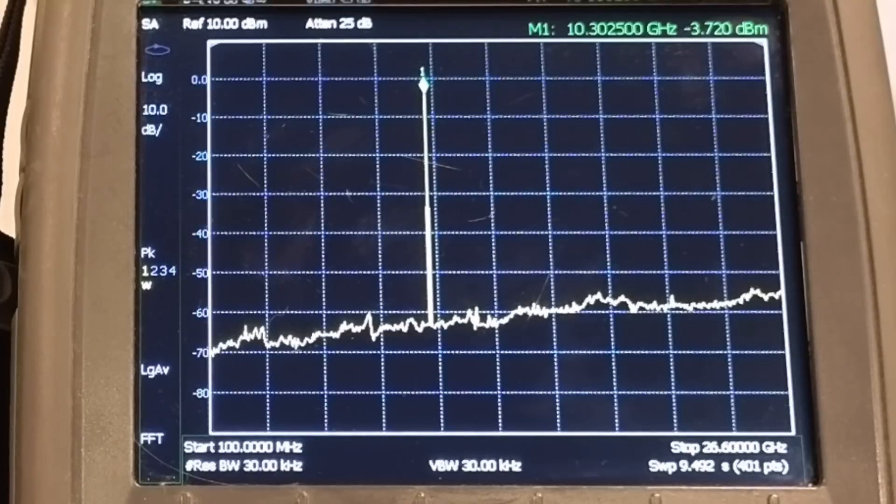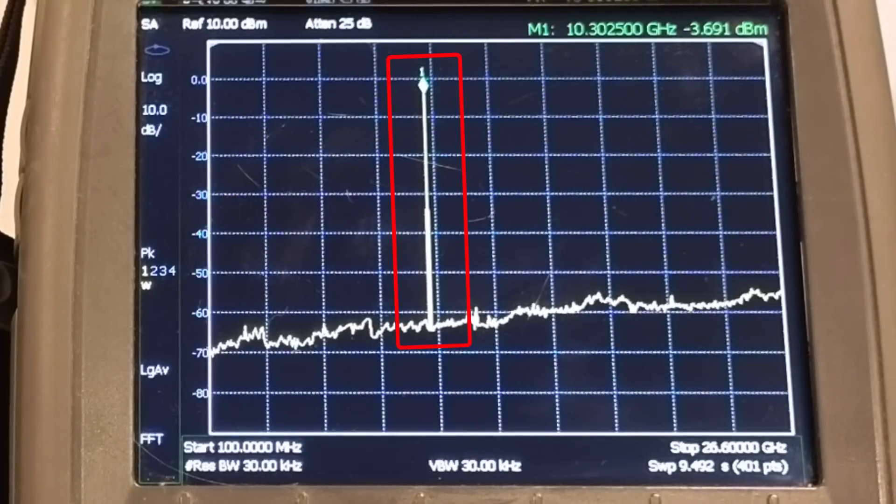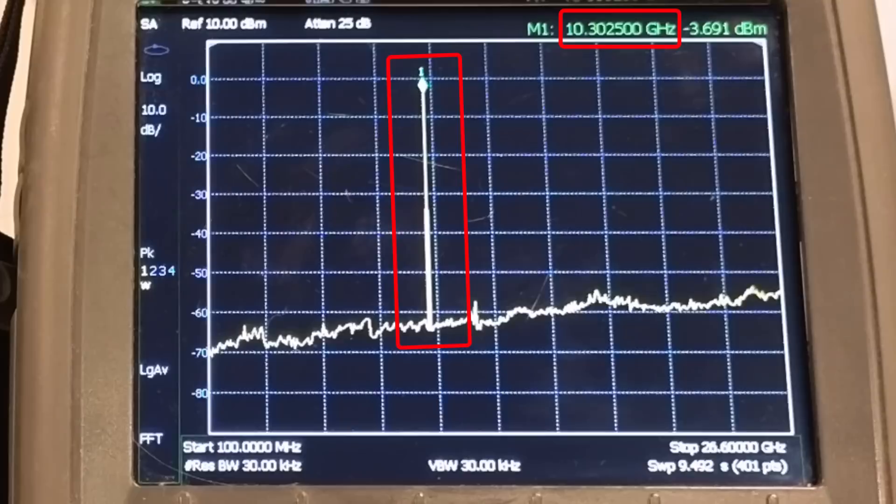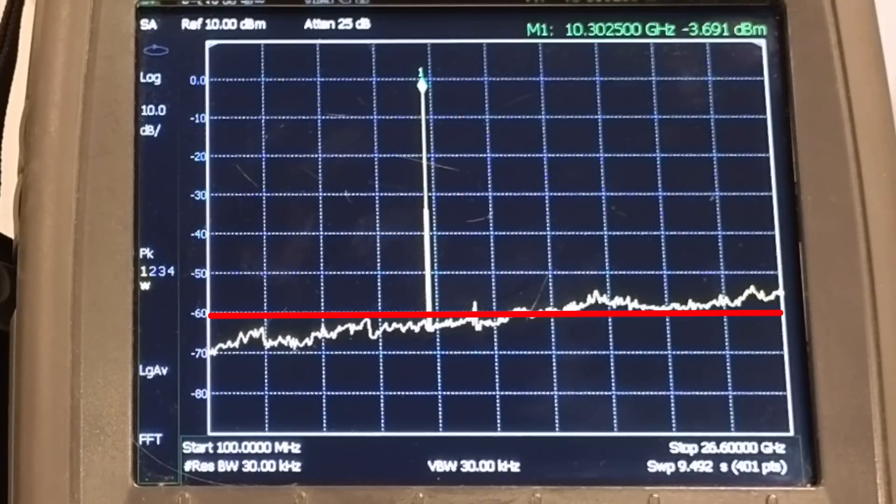And you can see that there is only one frequency spike on this plot, which is great. That is our transmit frequency of 10.3 gigahertz. There are no other spurs that peak above the noise floor of minus 60 dBm. So that's great. That is exactly what we want.